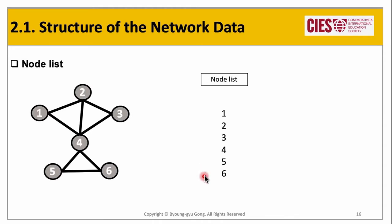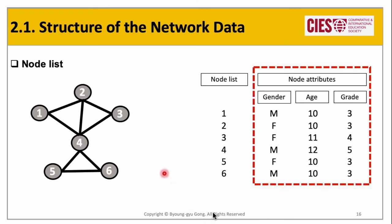The major role of the node list is giving attributes to each vertex, almost limitlessly. For instance, each node can have gender, age, and grade as its node attributes. Such information in the node attributes takes a critical role in visualizing the network, giving different colors and sizes to each vertex depending on its attributes.